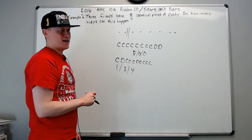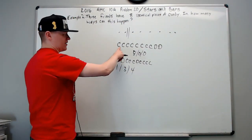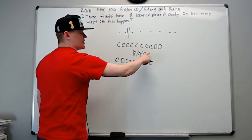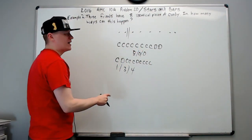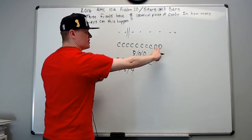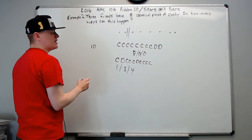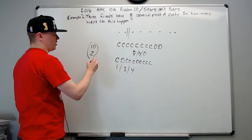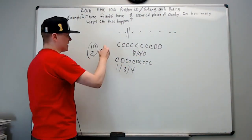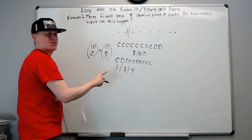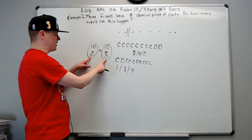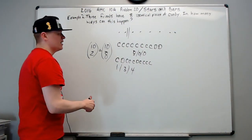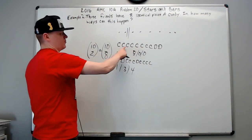We can think of it as: how many unique arrangements can be created with these letters? We have eight C's and two D's — ten total letters. We choose two of the ten positions to be D's, giving 10 choose 2. Or equivalently, 10 choose 8, since the two numbers below add to the top, they're equal — five choose two equals five choose three, for example.